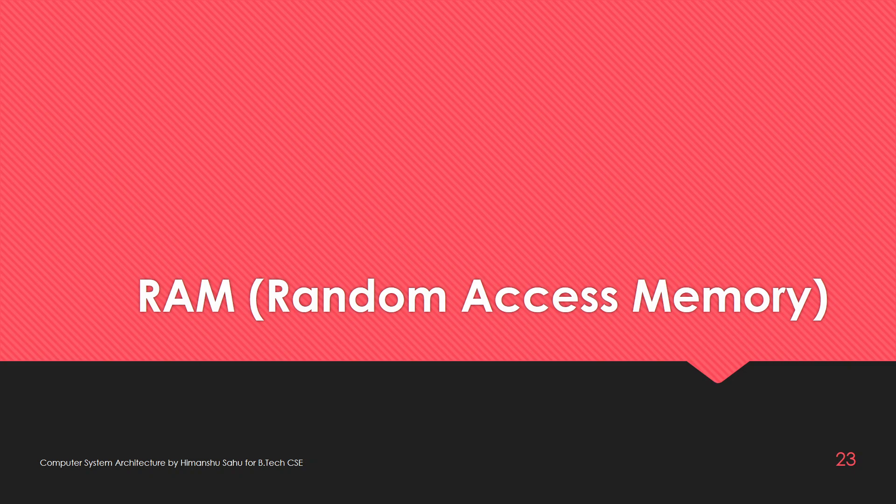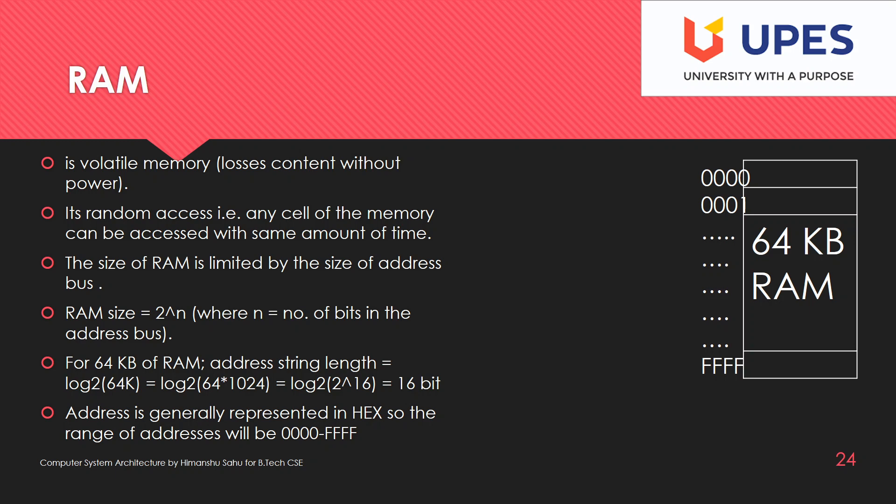RAM — primary memory or random access memory. It is a volatile memory, meaning it loses content whenever power is gone. Whenever you turn off your computer, the data stored inside RAM will be gone.